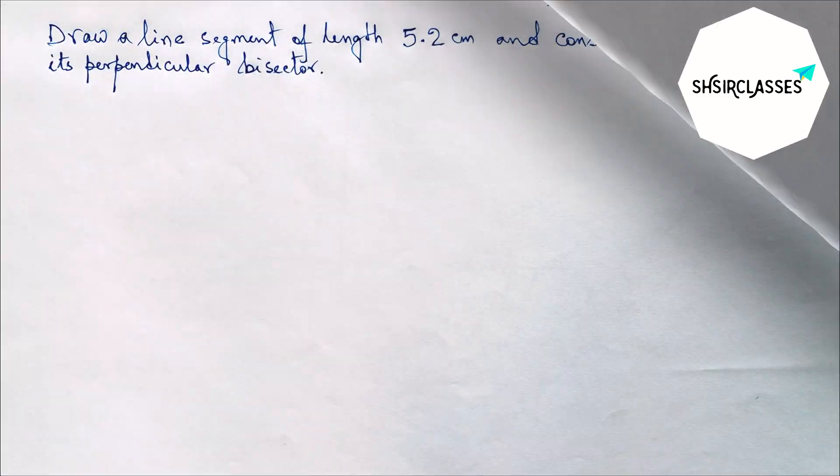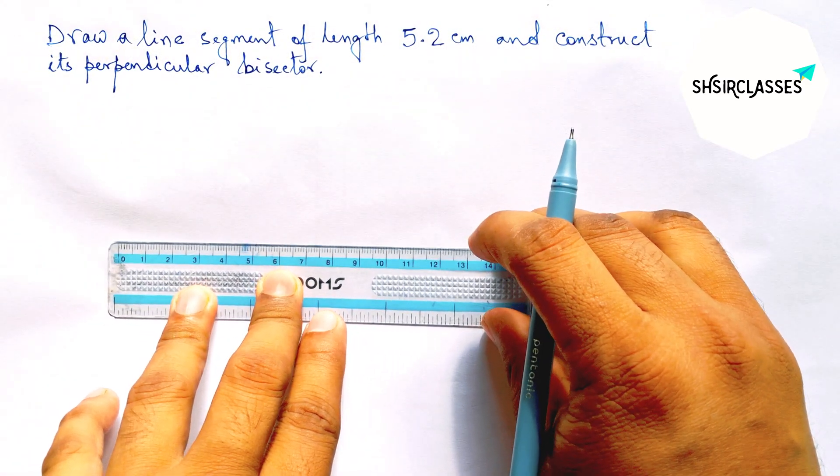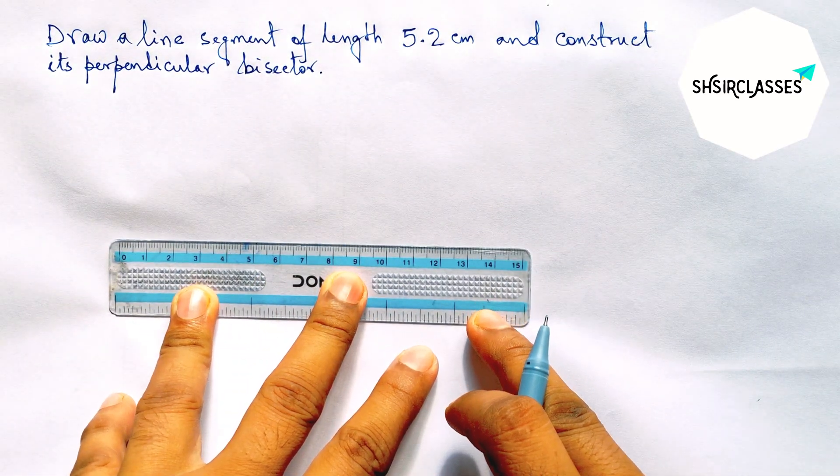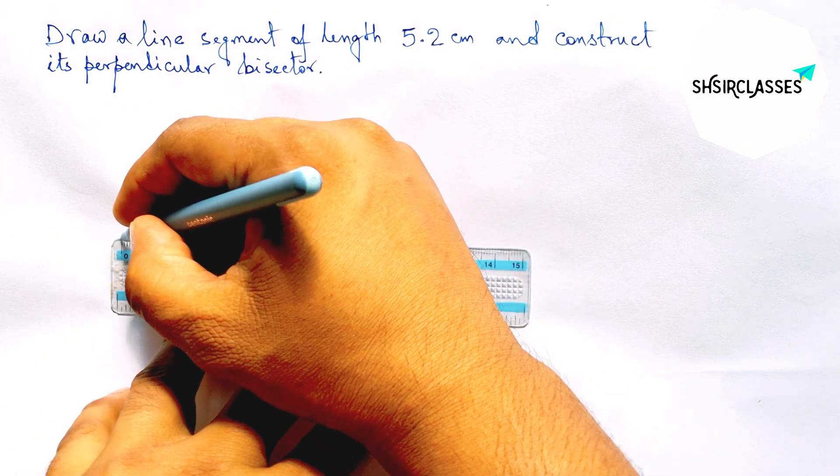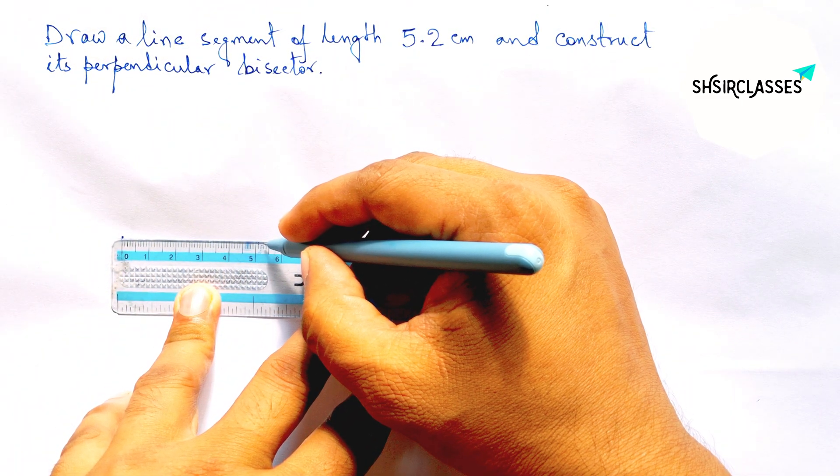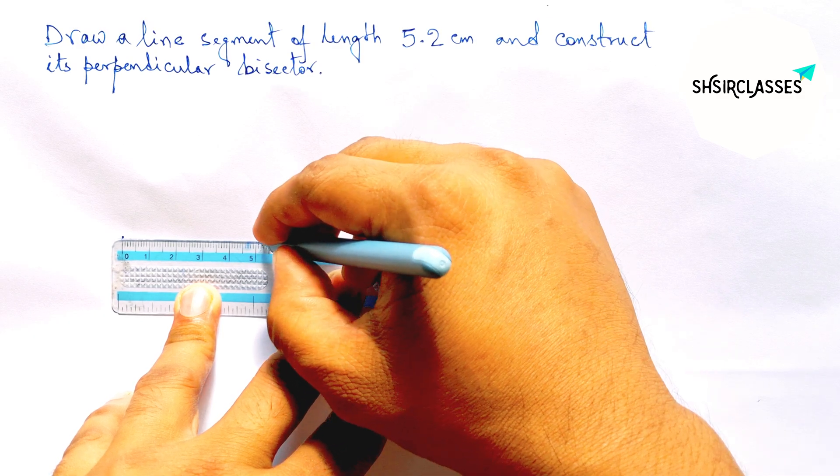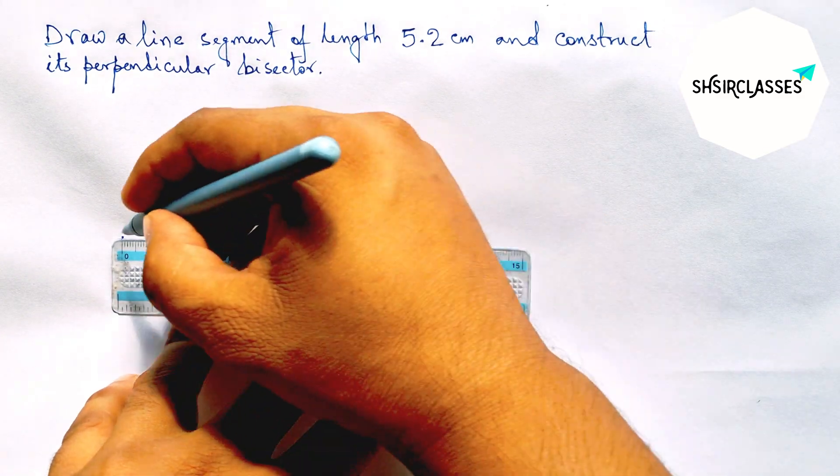First of all, let us draw here a line segment of length 5.2 centimeters. So here 5 and counting 2, so this is a 5.2 centimeter line segment.